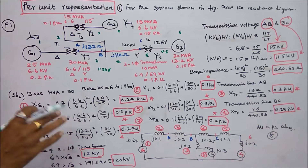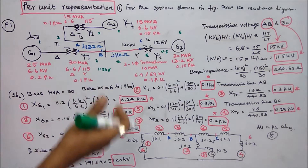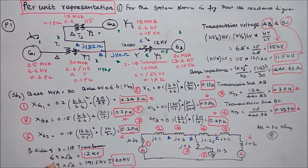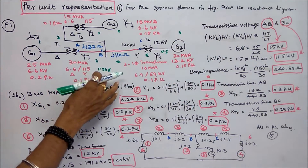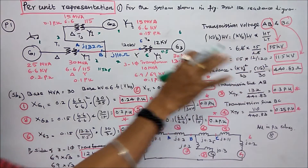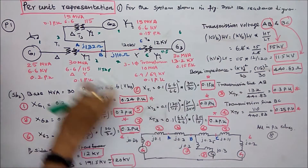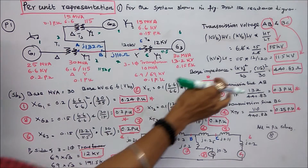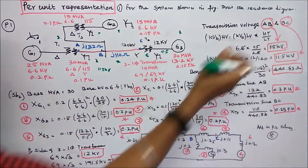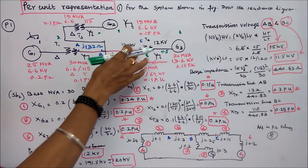For the transmission line per unit reactance, I calculate the base impedance. Base impedance = kV_base² / S_B = 115² / 30 = 440.83 ohms. The given value for line AB is 132 ohms. Therefore, transmission line AB per unit impedance = 132 / 440.83 = 0.3 per unit.